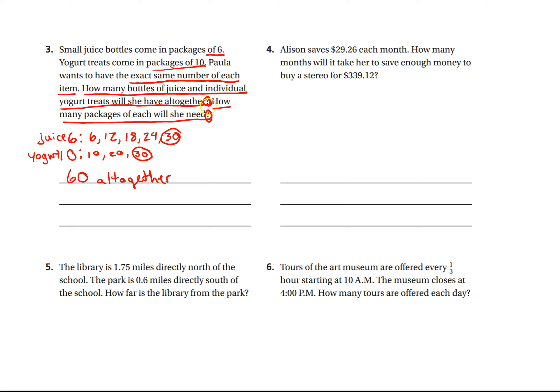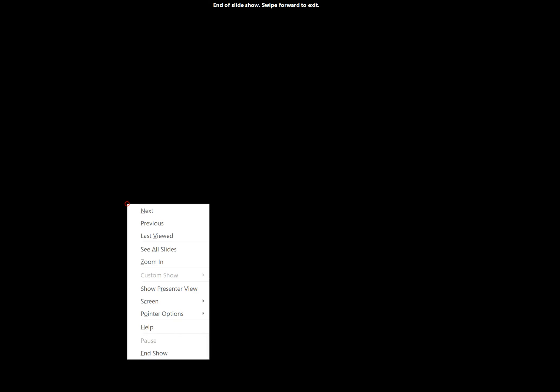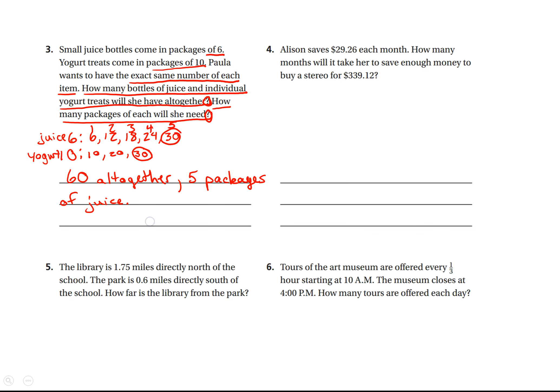How many bottles of juice and individual will she have all together? She'll have 60 all together. That was my first question. And then the second question, how many packages of each will she need? Well, this is one package, two package, three, four, five packages of juice. And then this is one, two, three packages of yogurt.